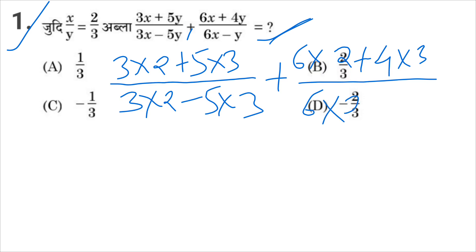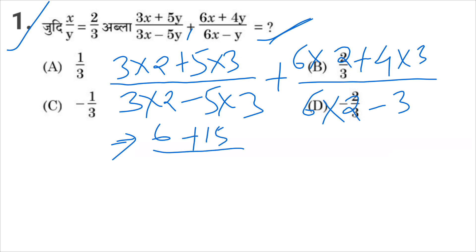X equals 2, and Y equals 3. So that we will make: 2X plus 1Y plus 1Y plus 1, then 5X plus 2Y minus 1.